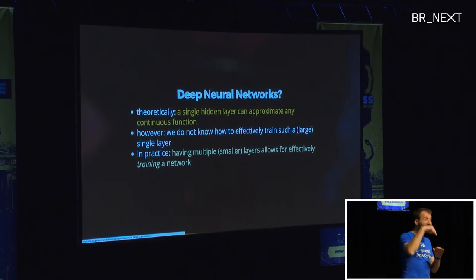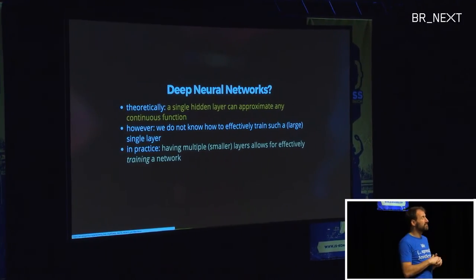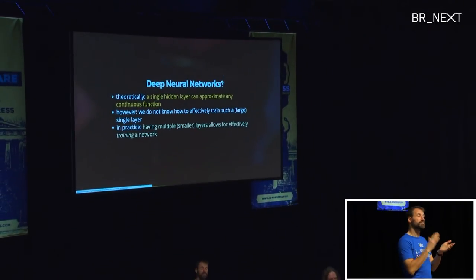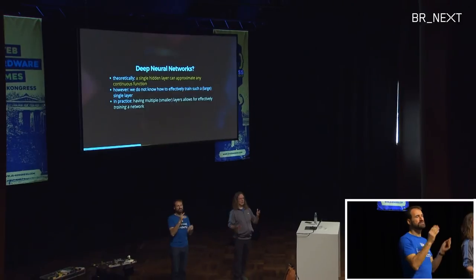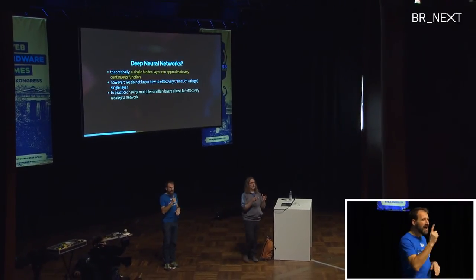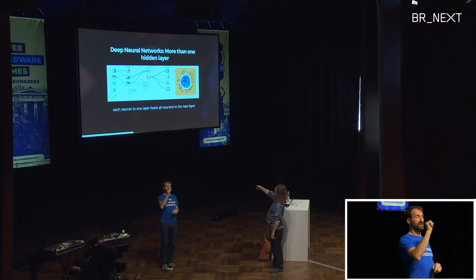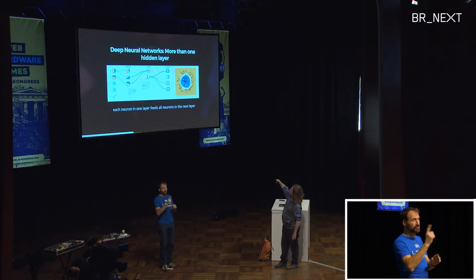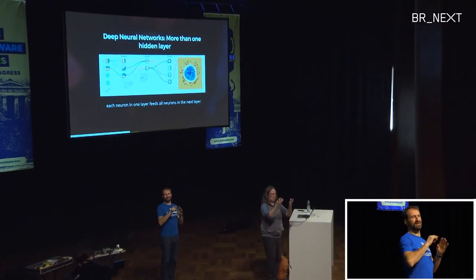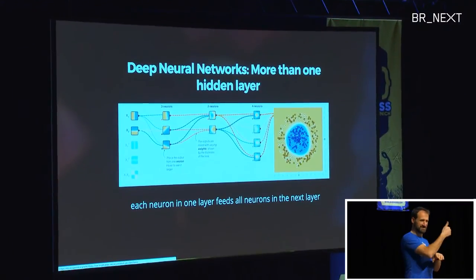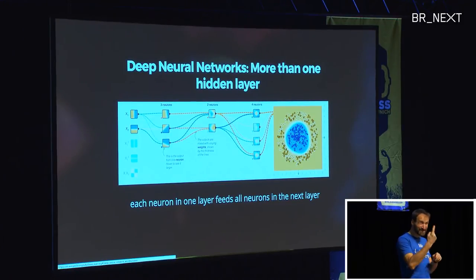So why am I talking about deep neural networks? It is mathematically provable that you can solve each function with a single hidden layer, but there's no efficient way to train such a large single hidden layer. What people do in practice is create multiple hidden layers — and that again makes it possible to train them effectively. You see with a first and second hidden layer, the results get more interesting, eventually producing something that almost looks like a circle. The result is much better, and splitting into many layers makes it more efficient and practically feasible.